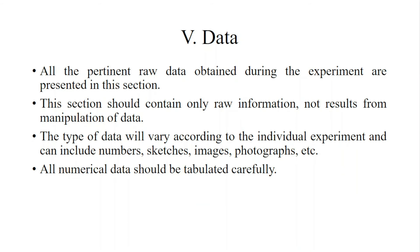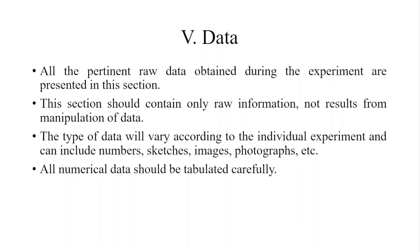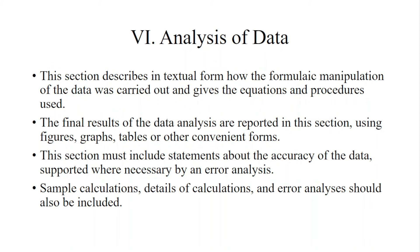The next section is Data. This is the raw data obtained from your observations or procedure during the experiment. The type of data will vary according to individual experiments — it may be observations, images, or sketches. All numerical data should be tabulated carefully in this section.